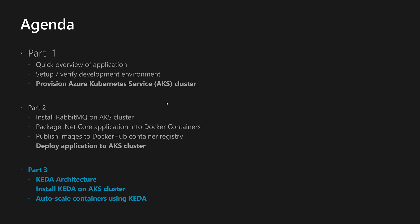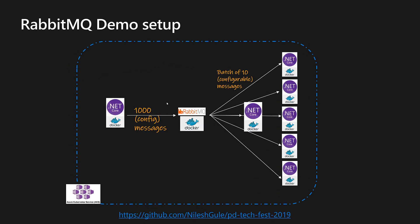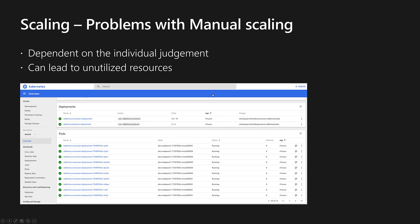We will look at the KEDA architecture, install KEDA on the AKS cluster, and focus on the auto scaling features of KEDA. Let's quickly review the demo app: we deployed the AKS cluster with a .NET Core consumer and producer. The producer produces a configurable number of messages onto RabbitMQ, and these messages are consumed by the consumer in a configurable batch size.